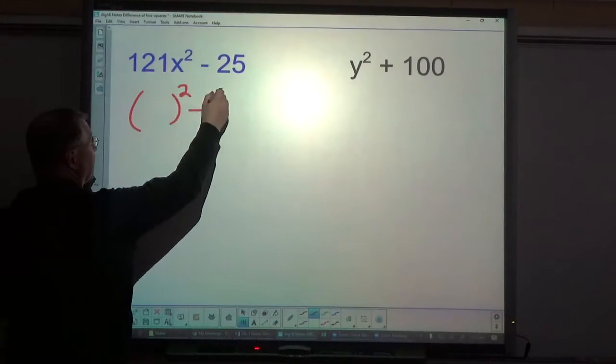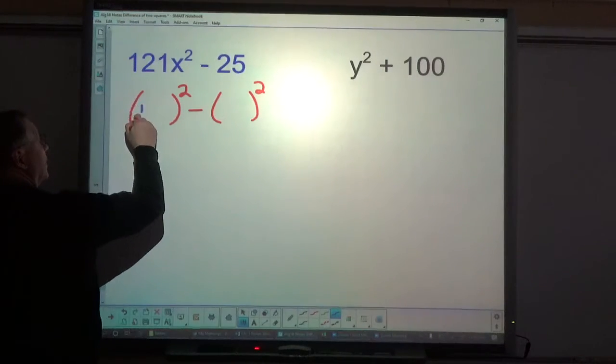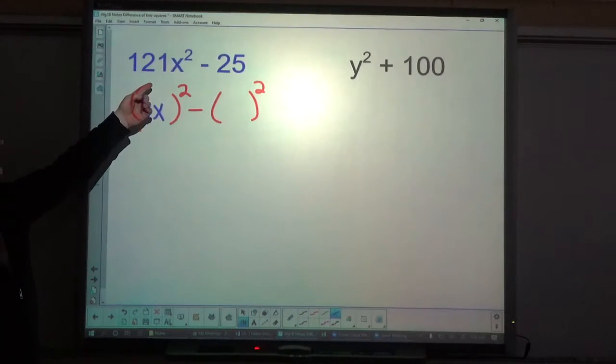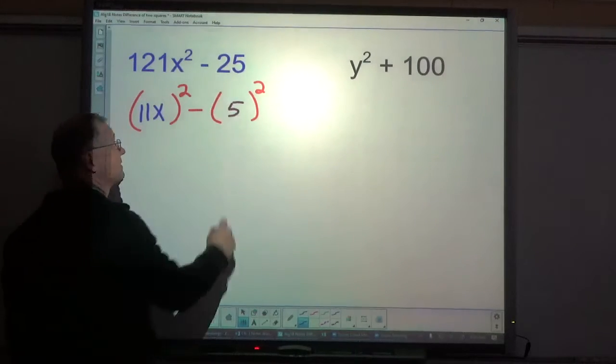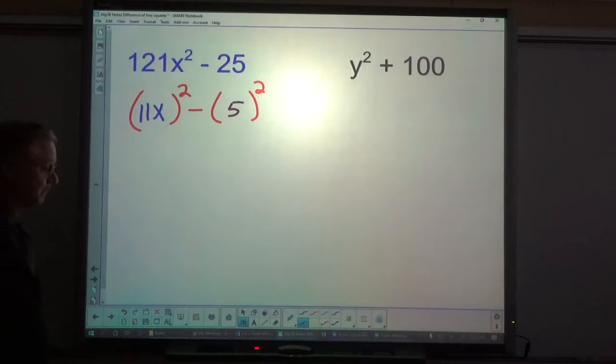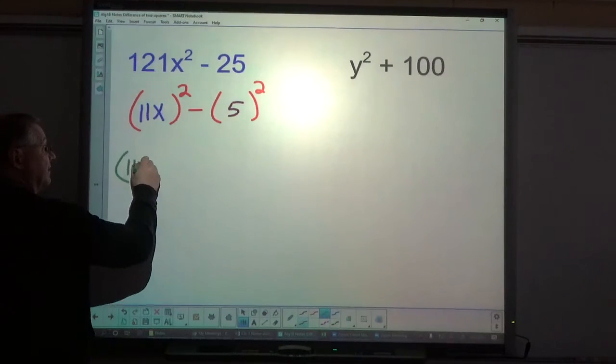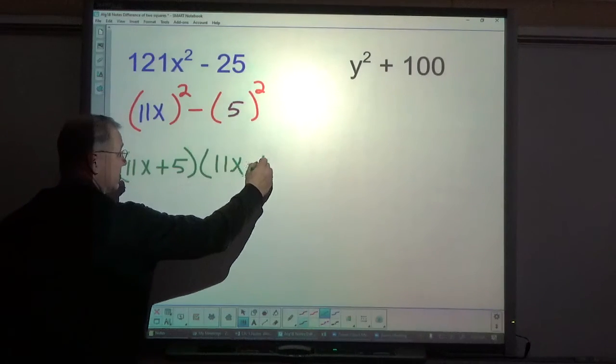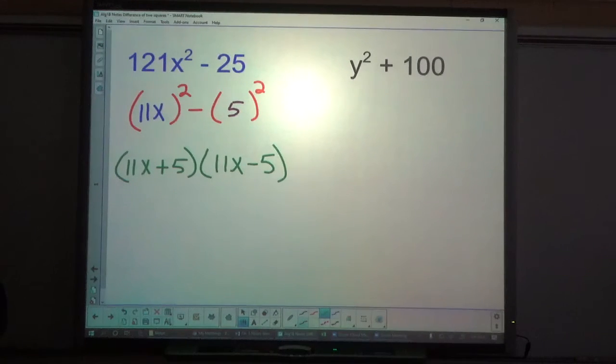What squared minus what squared? Well, it turns out 11x has to be squared to give you 121x squared, and 5 has to be squared to give you 25. So my answer is 11x plus 5, 11x minus 5, and there's your answer with factoring difference of two squares.